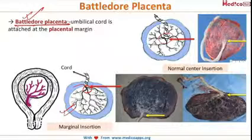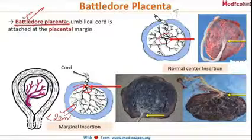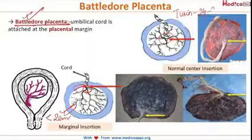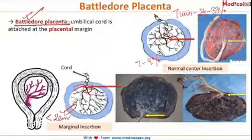So, battledore placenta. In this, the shortest distance between the cord insertion and the placental edge is less than 2 cm. The incidence of battledore placenta is more in cases of twin pregnancies, where it is somewhere around 24 to 33%, and in single term pregnancies the incidence is 7 to 9%. In most cases, battledore placentas are asymptomatic.